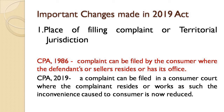Now let us discuss some important changes made in the 2019 Act by comparing it with the previous Act. The first important change is the place of filing a complaint. Under the 1986 Act, if someone wanted to file a complaint, they had to go to where the seller was located. But now, under the 2019 Act, the consumer can file a complaint at the consumer forum in the area of their residence or office. It is now easy for consumers to file cases within their own territorial jurisdiction.